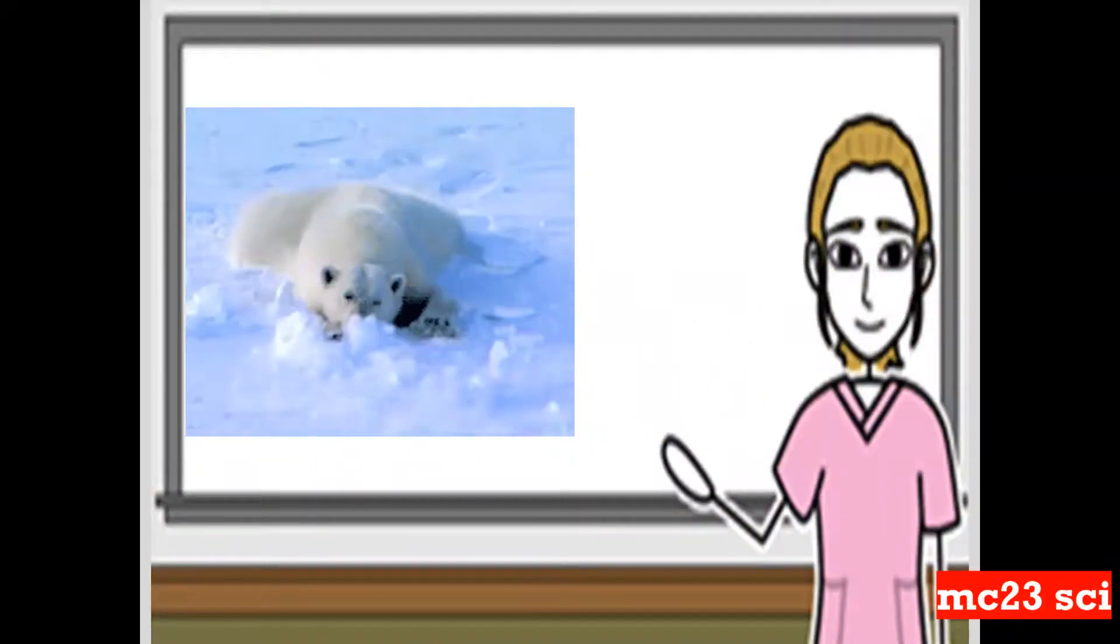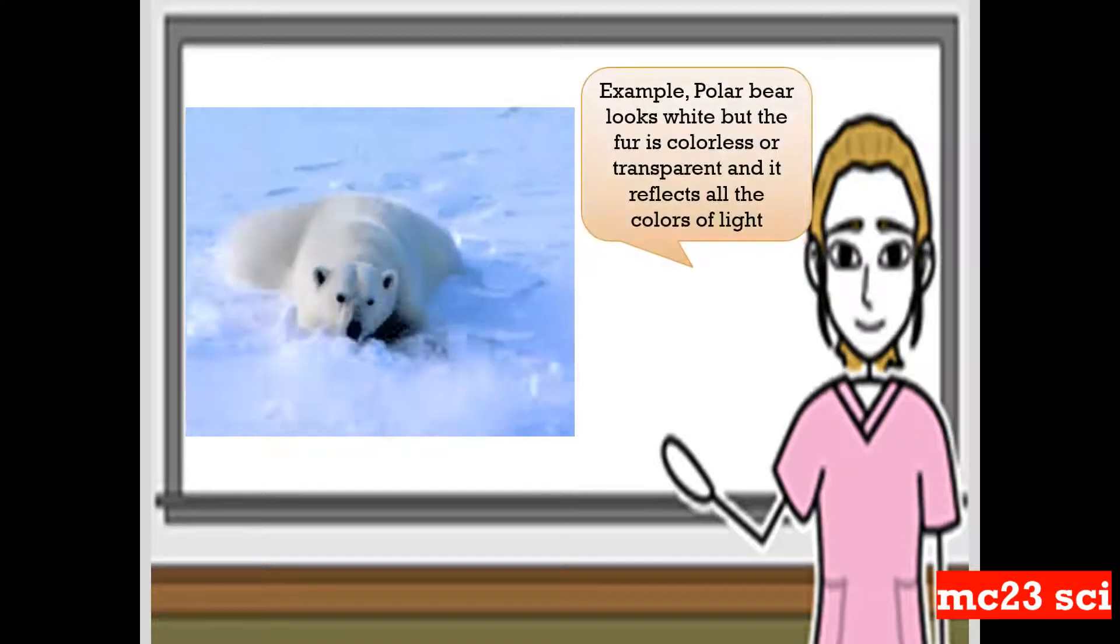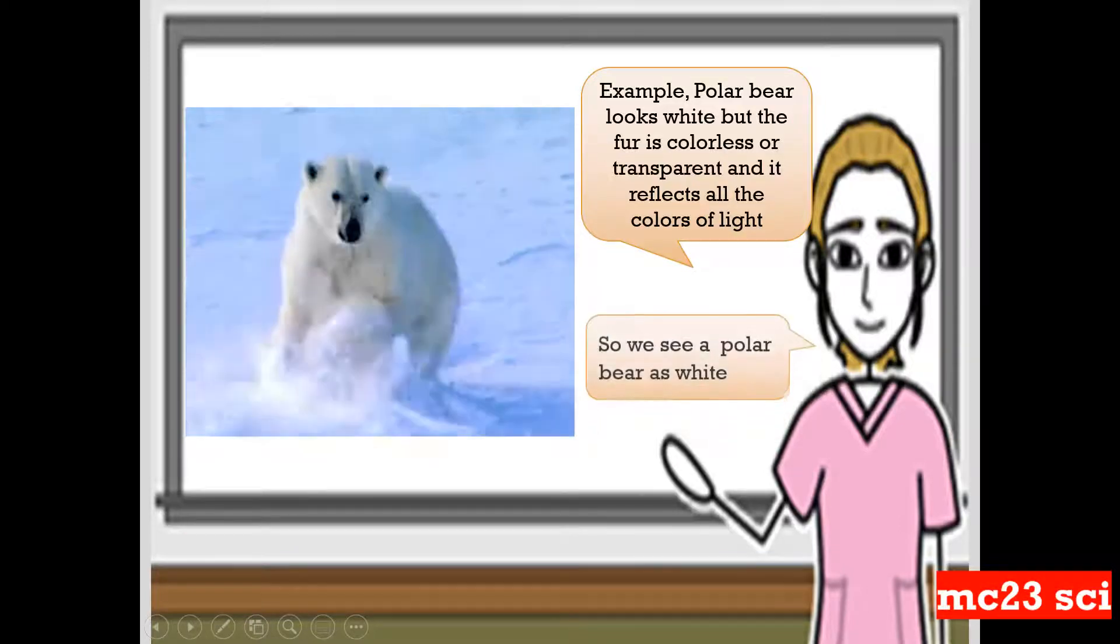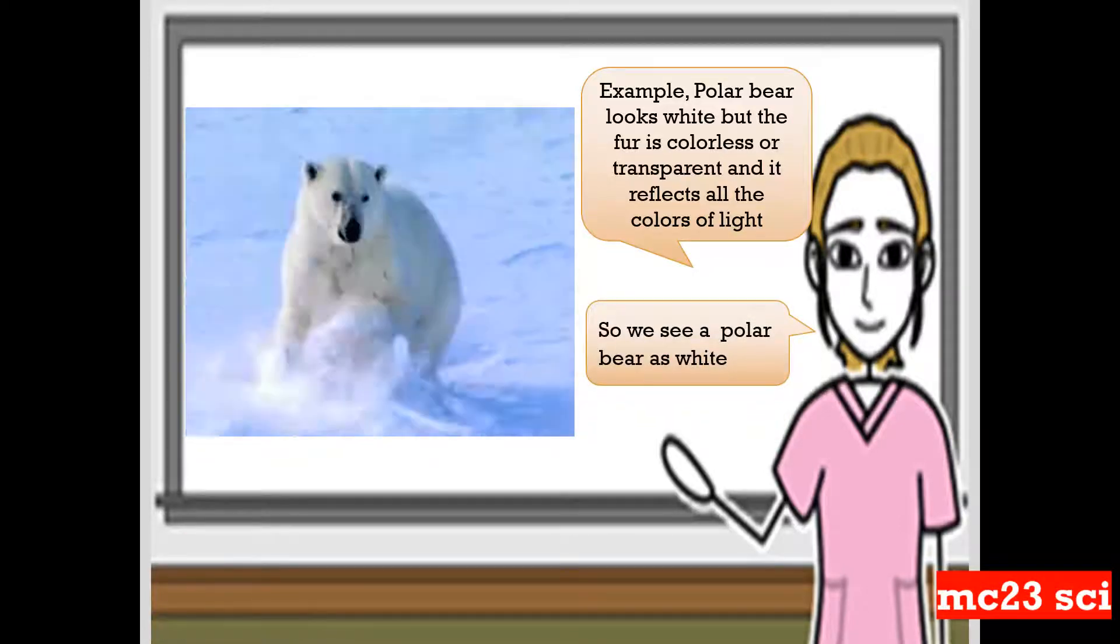Take a look at the picture. Example, polar bear looks white but the fur is colorless or transparent and it reflects all the colors of light. So we see a polar bear as white.